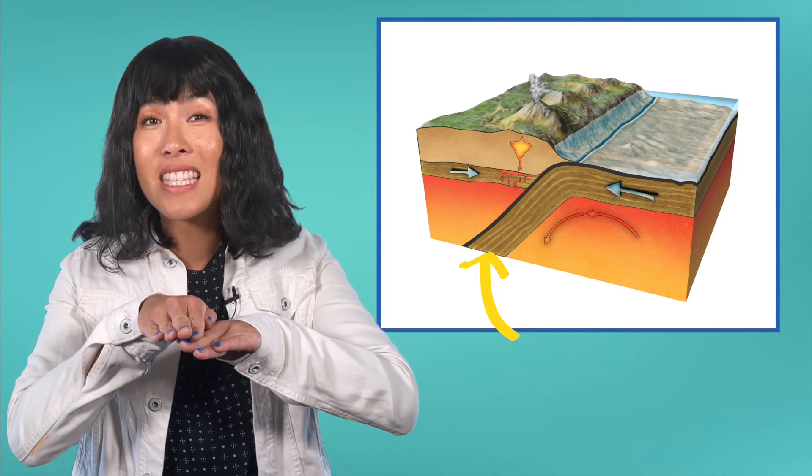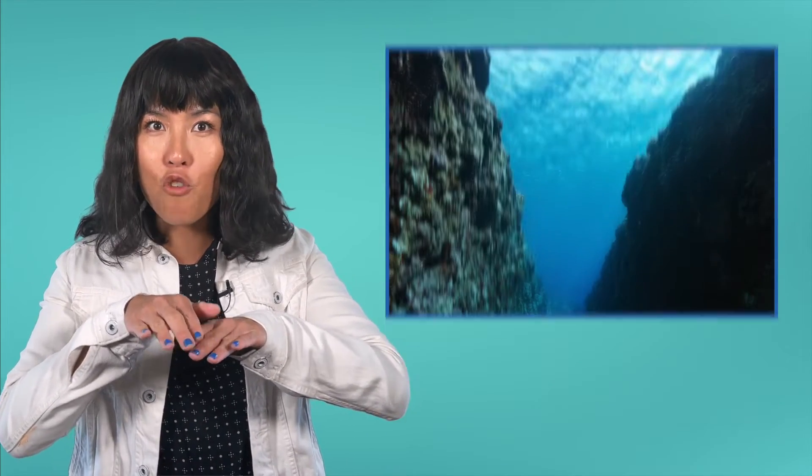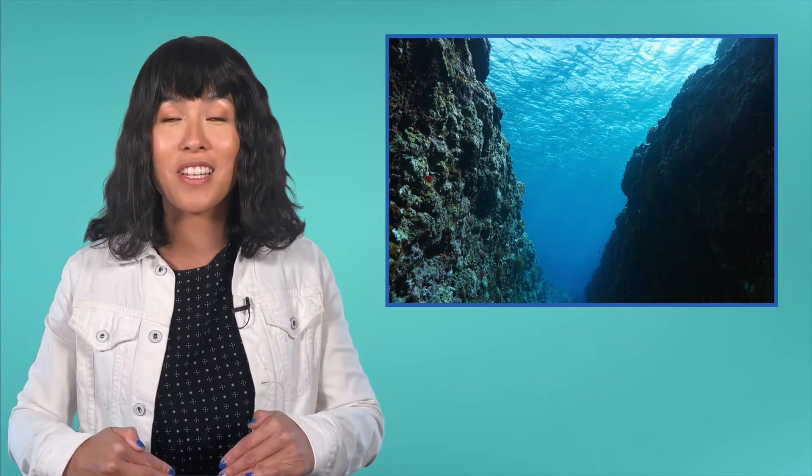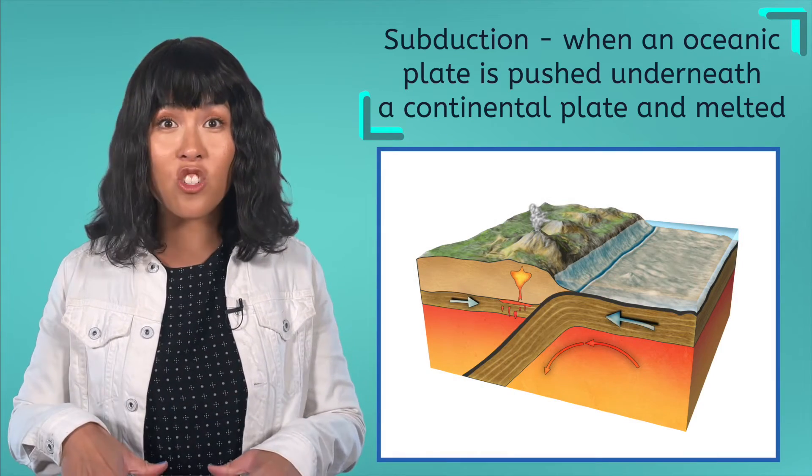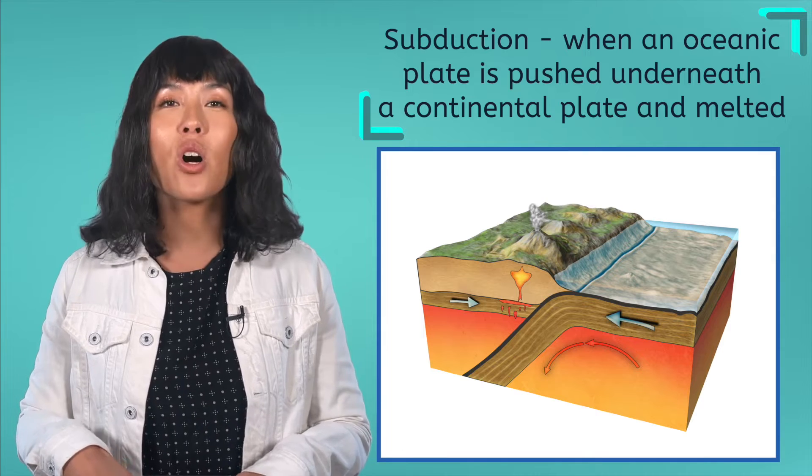This makes the seafloor buckle and change shape, often forming deep oceanic trenches as it's pulled down, like the Mariana Trench. When an oceanic plate is pushed down underneath a continental plate, it's called subduction.